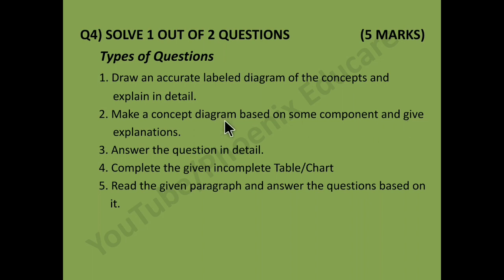Third type for Question 4 is answer the questions in detail — long answer questions for 4 or 5 marks, where you need to write 8 to 10 points. Fourth is complete the given incomplete table or chart. Fifth is read the given paragraph and answer the question based on it — paragraph-based questions, jaise history mein aata hai — paragraph diya hoga jisme se aapko answer find out karna hai.